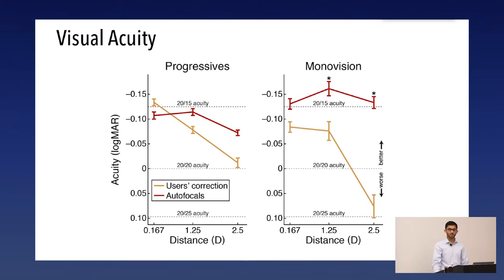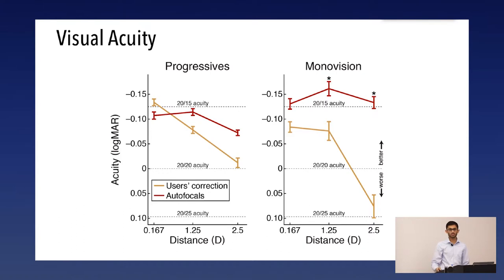With their own correction, there's a clear trend of acuity falling off at closer distances. Progressives maintain better than 20/20 acuity but show a clear trend, while monovision gives worse than 20/20 acuity at closer distances — because the two eyes are at different focal lengths, forcing users to decrease the inter-eye difference, limiting how close they can see. Autofocals, on the other hand, don't exhibit the same downward trend and maintain well above 20/20 acuity at all distances.